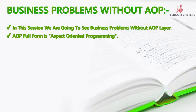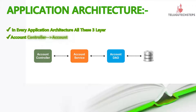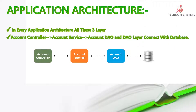Let's take an application architecture. When you have an application, it has an architecture like this: an accounts controller, an account service layer, and an accounts DAO layer. The DAO layer is connected with the database, and we have code for data access.